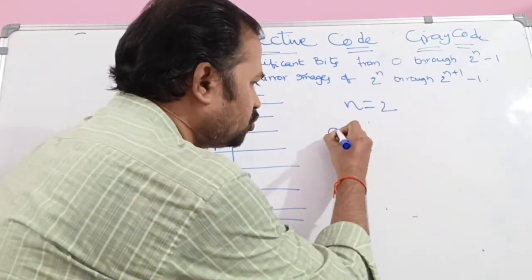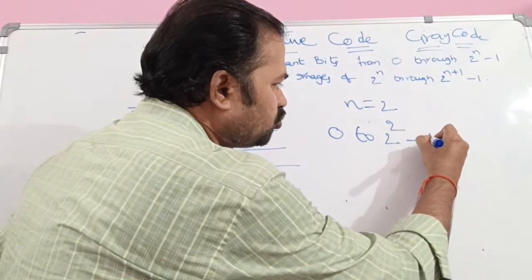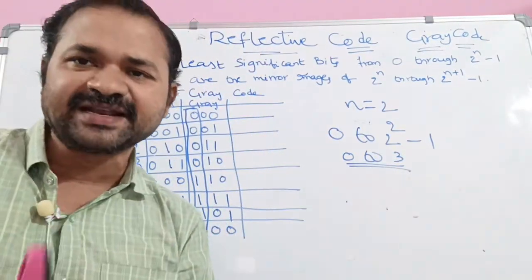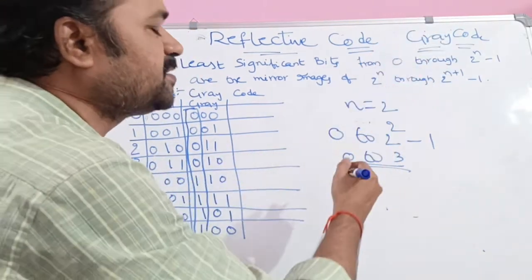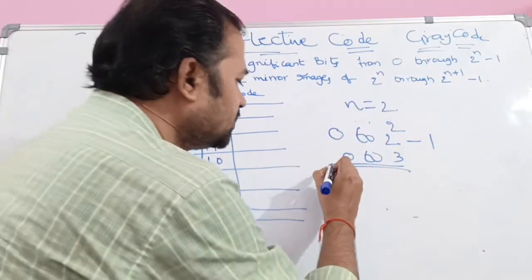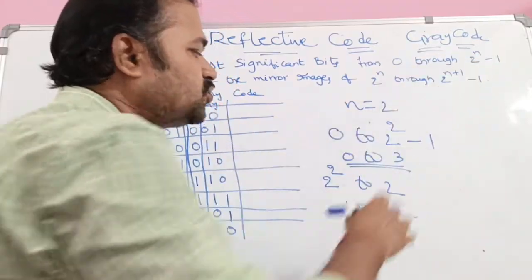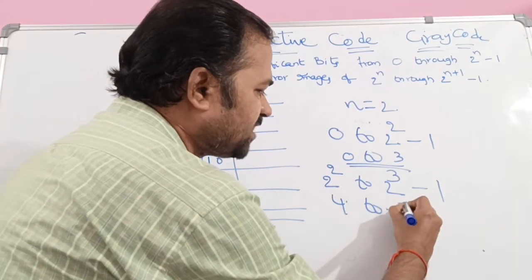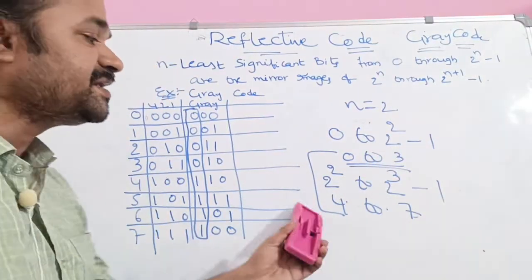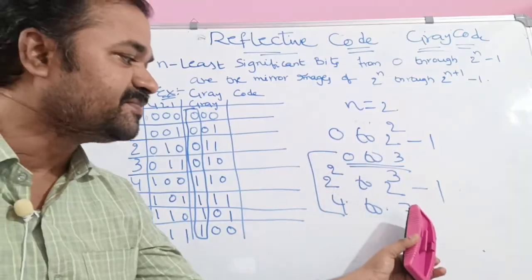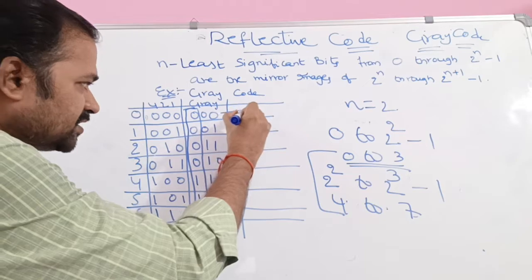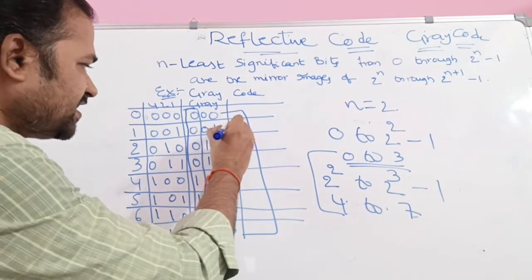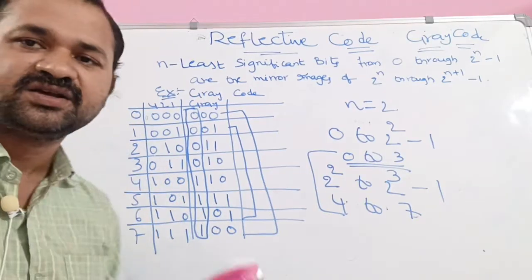So 0 through 2^n minus 1: with n=2, that is 0 to 3. These are mirror images of 4 to 7. So 0 is the mirror image of 7 — both have the 2-bit pattern 00. Next, 1 is the mirror image of 6 — both have the pattern 01. They are the same.